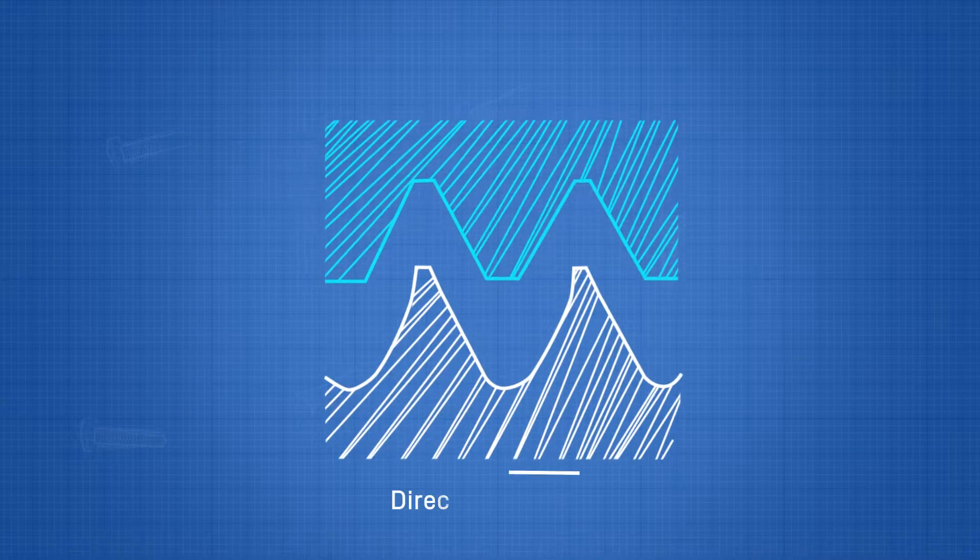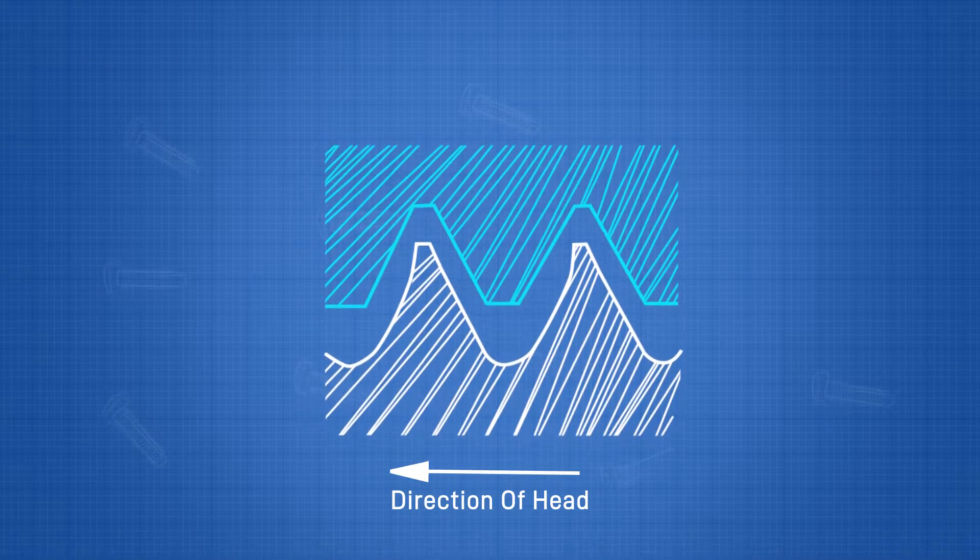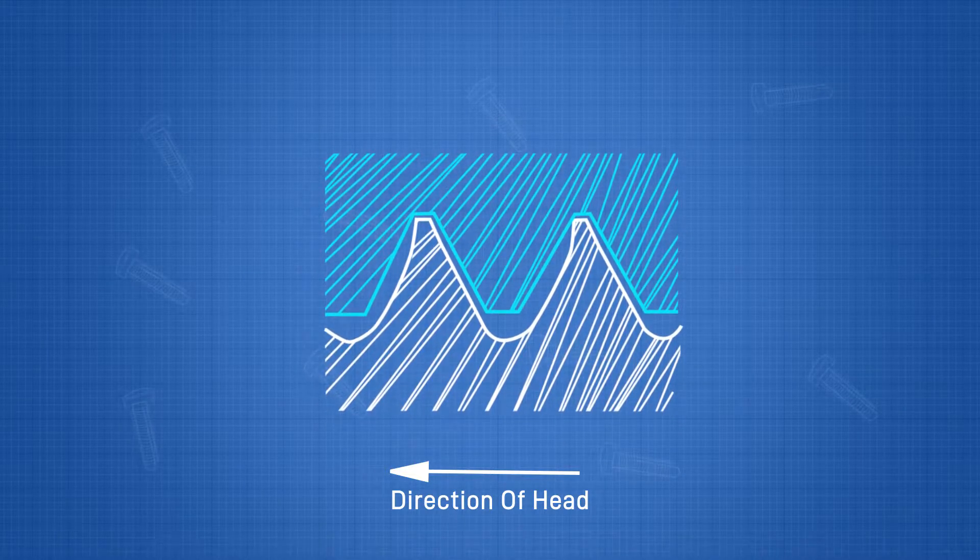The interference with the root of the nut thread is created by the 30-degree tip, which displaces material in the root of the nut thread.